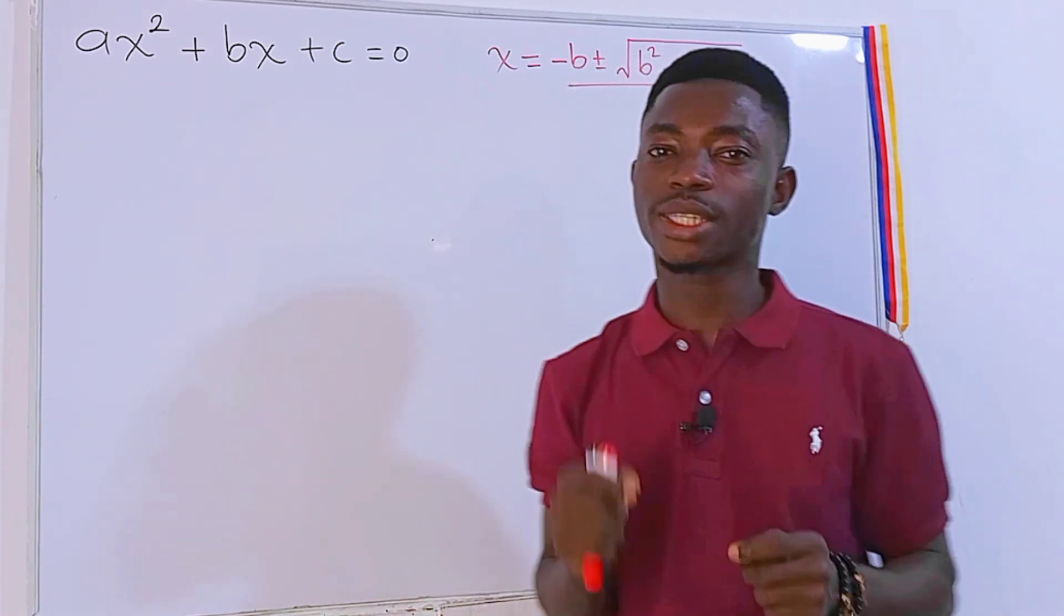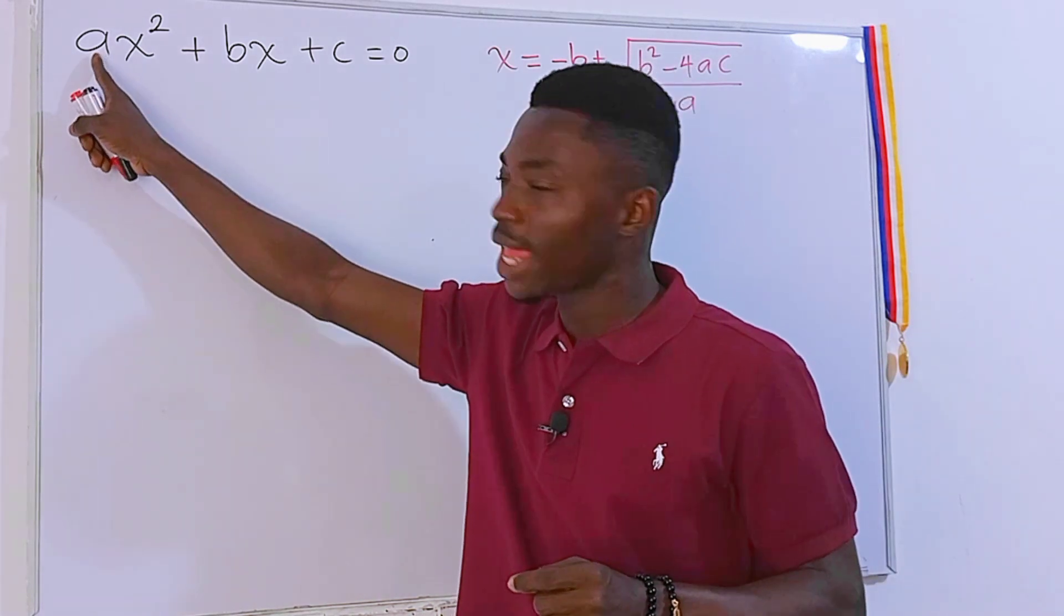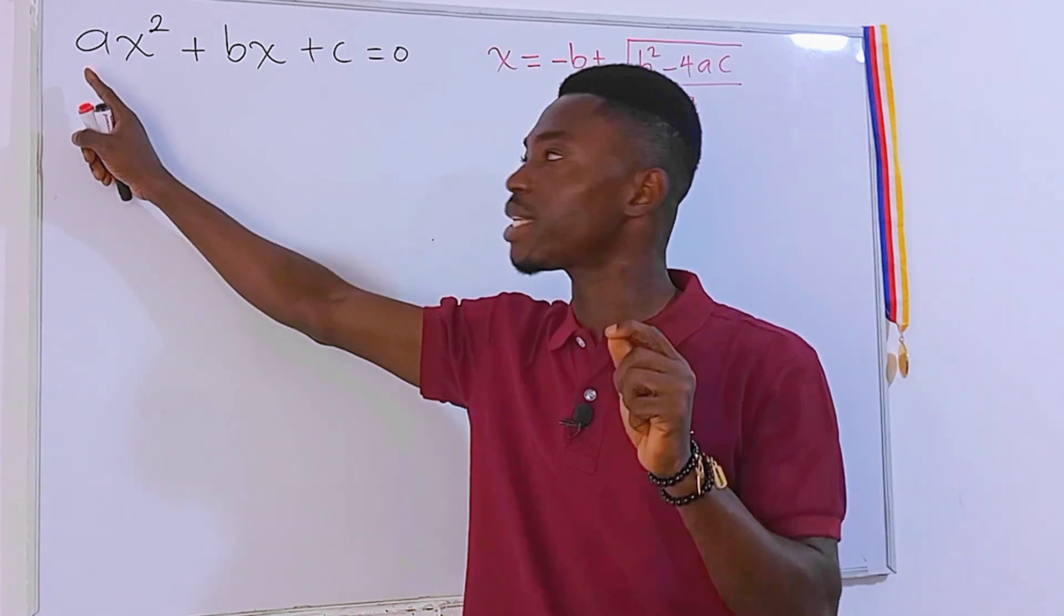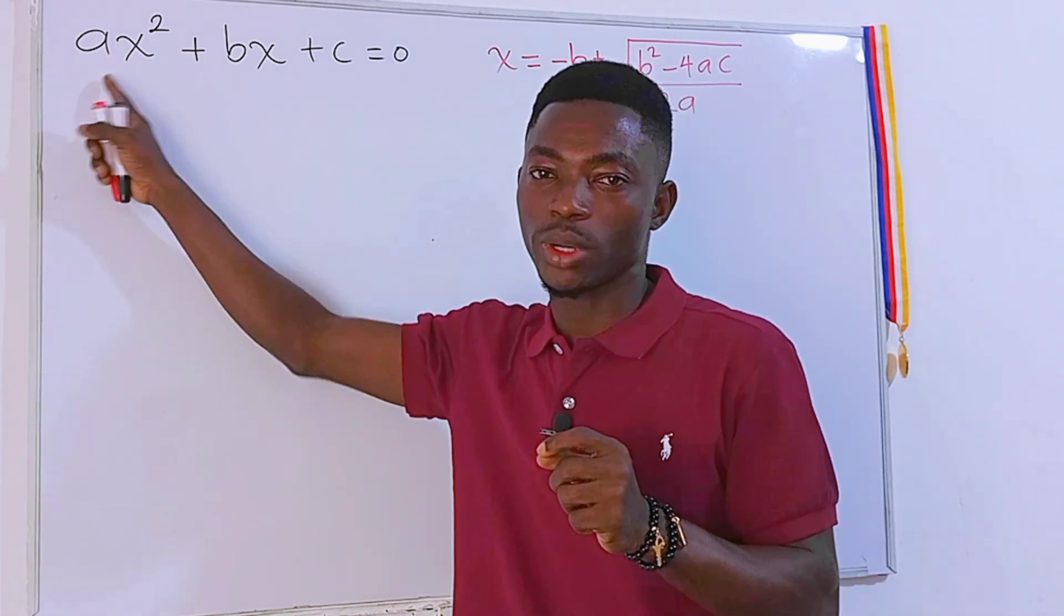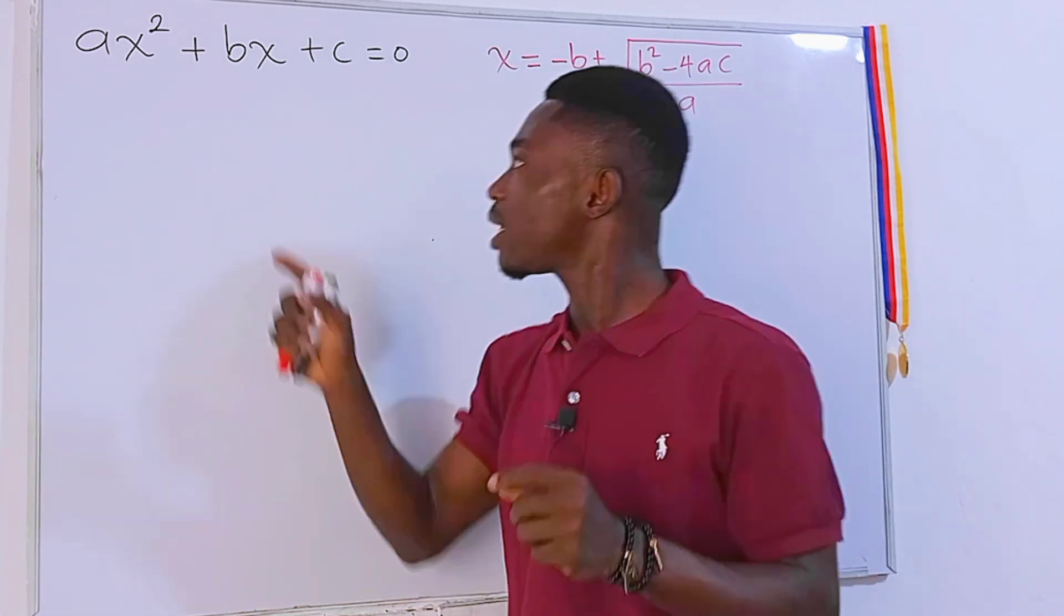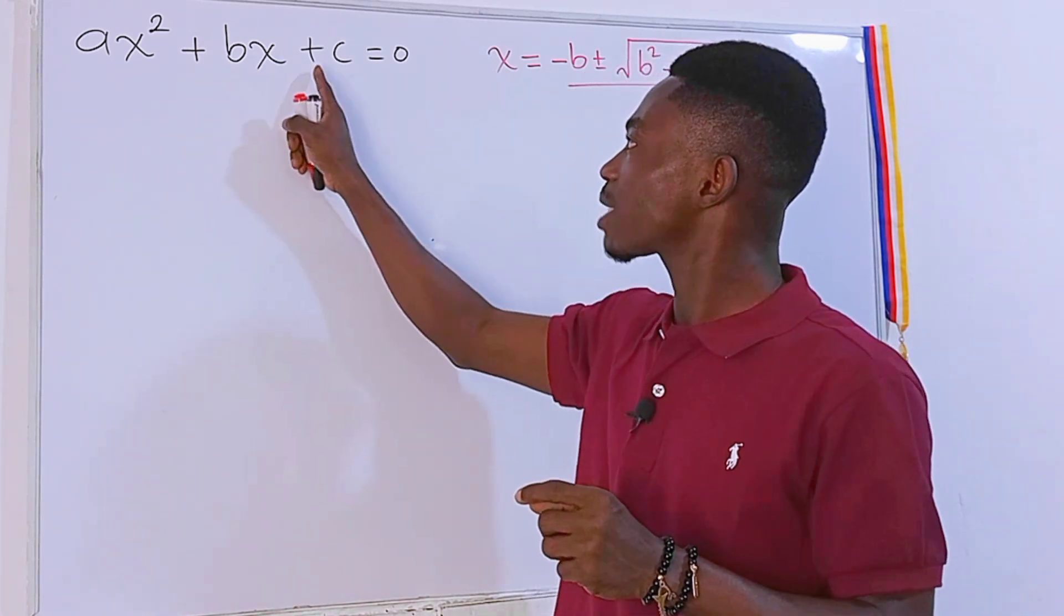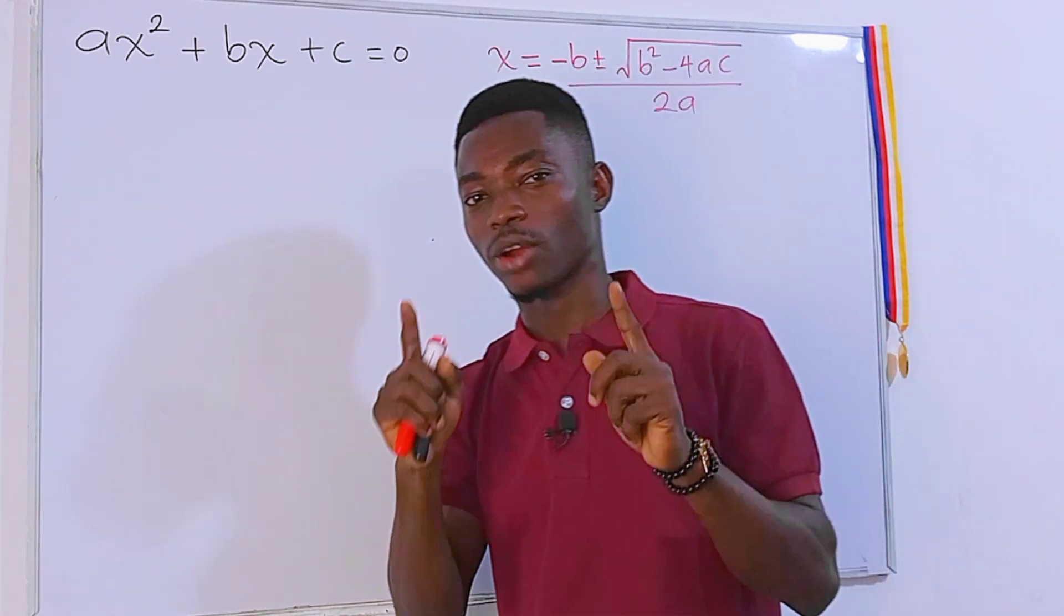But before we start, let's pay attention to this a here. This a can never be zero and the reason is that if it is zero, then it means that the rule of this term will disappear. And if it does that, then we are going to have bx plus c, which is never a quadratic equation.